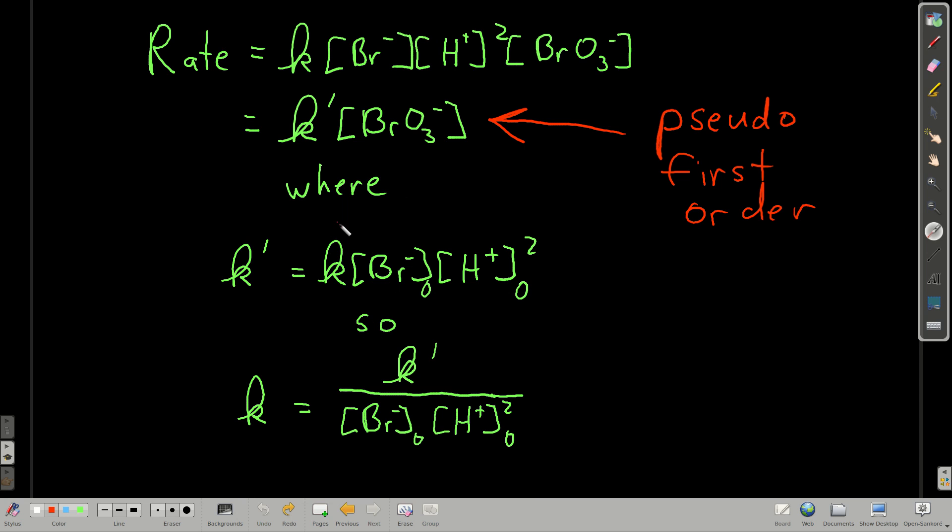So what we can do is, we can do our normal experiment, do our normal kinetics, and find the K prime, our rate constant for the pseudo first order reaction. But once we know that, we can rearrange this equation, solve it for the real rate constant, because we know what the initial concentrations of these are, plug them in, and we now know what the rate constant is for the overall reaction regardless of the initial concentrations.